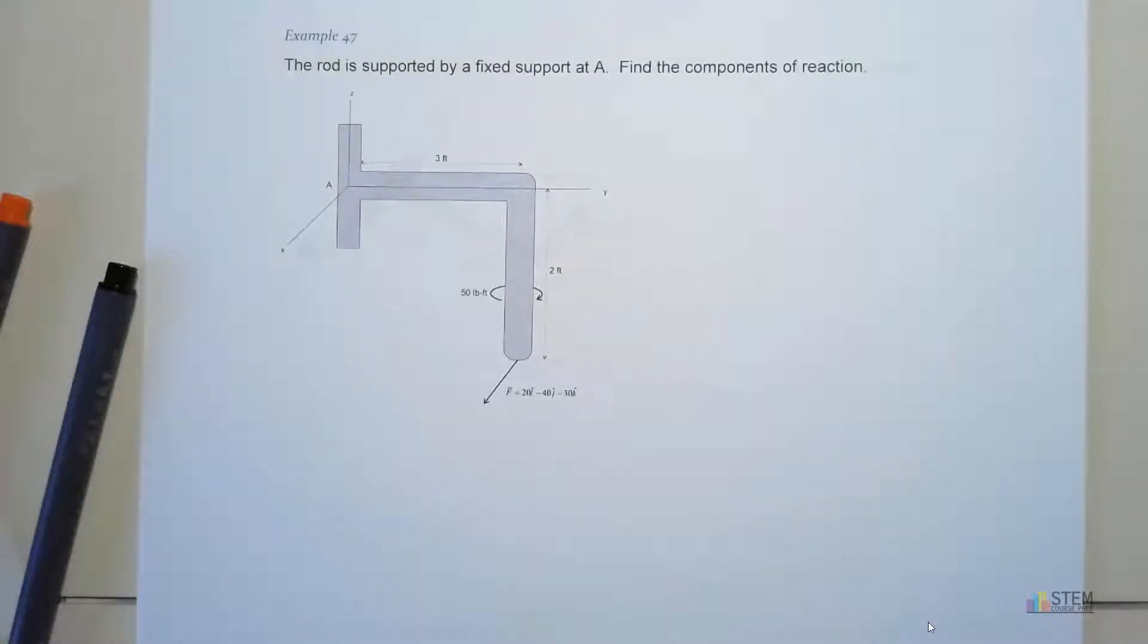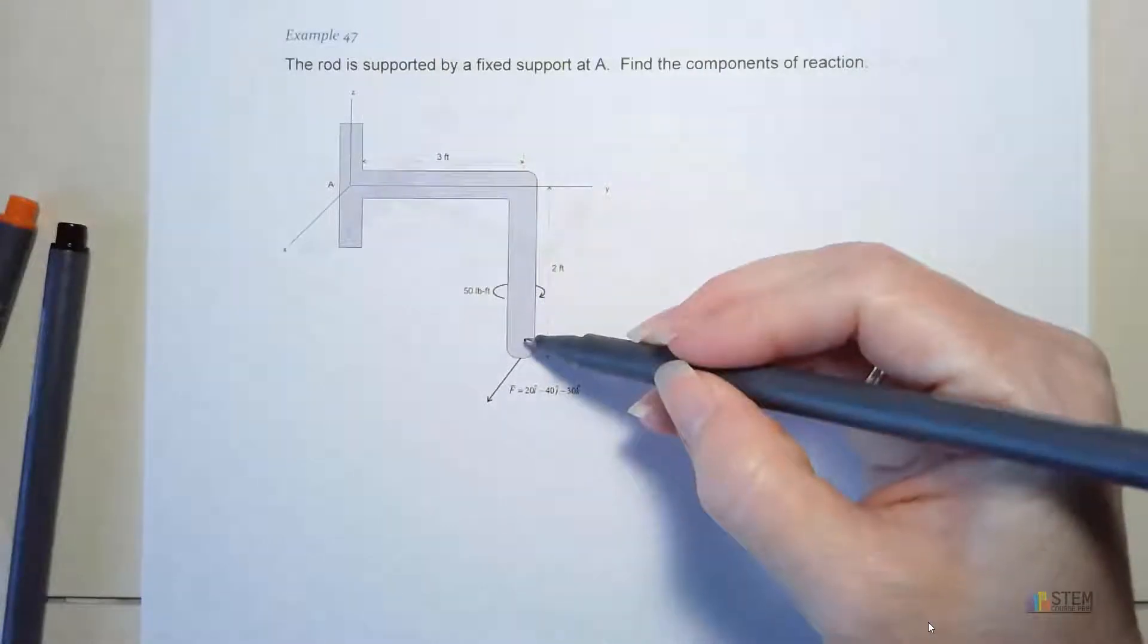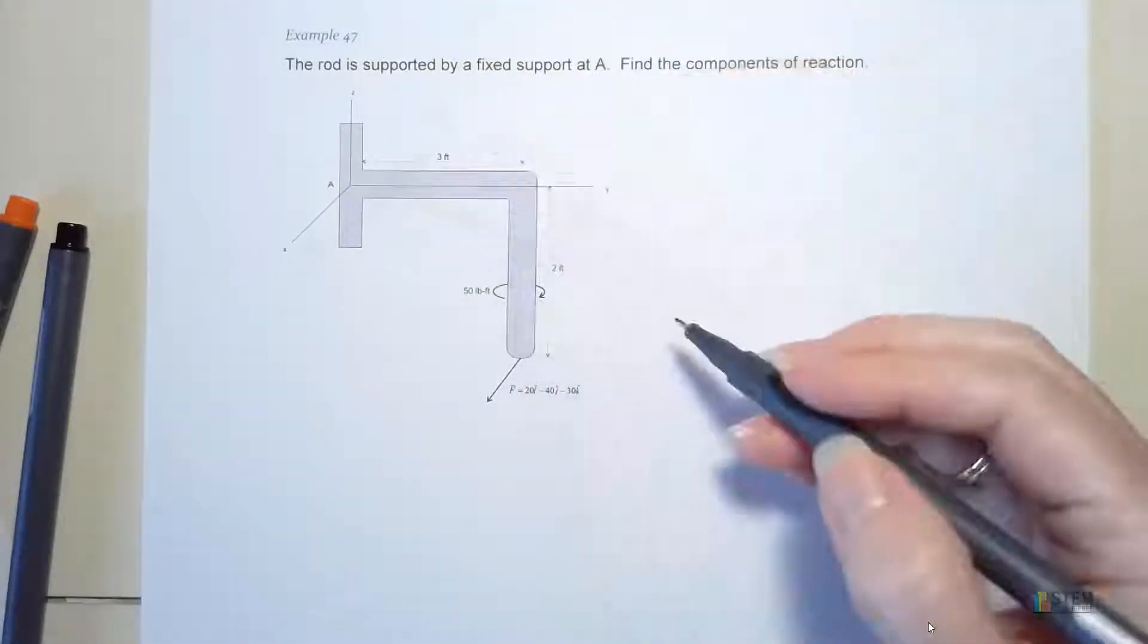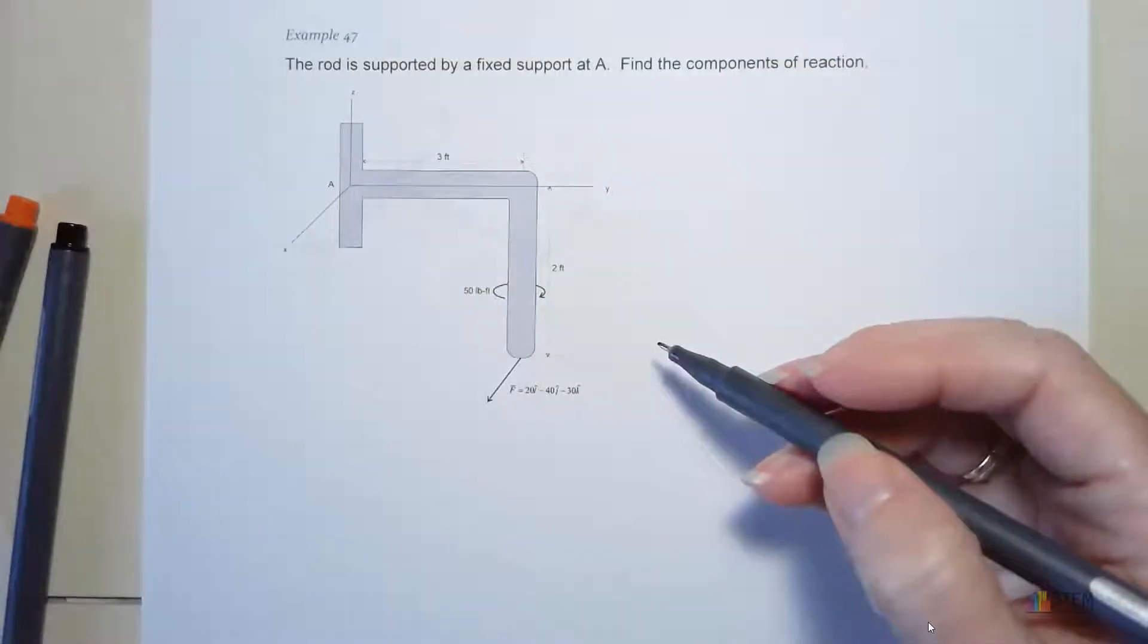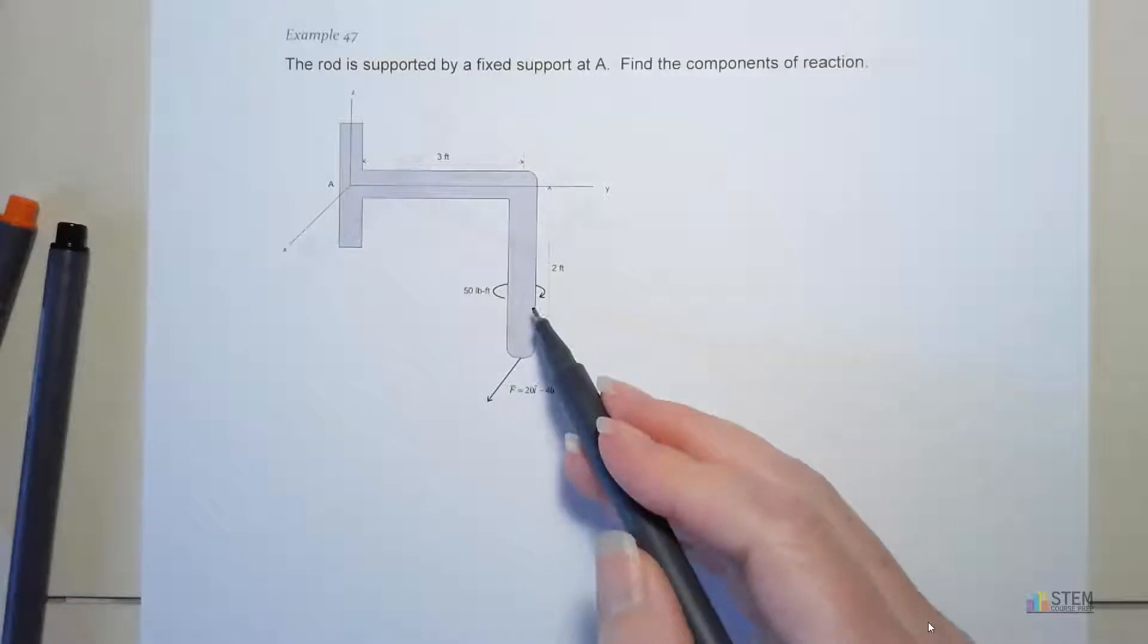Here we've got a problem with a fixed support. We're going to assume this piece here is like a rod attached to a fixed support at A. What we want to do is find our components of reaction. Notice we've got a force vector applied here at the end and then we've got this couple moment that's also on here.